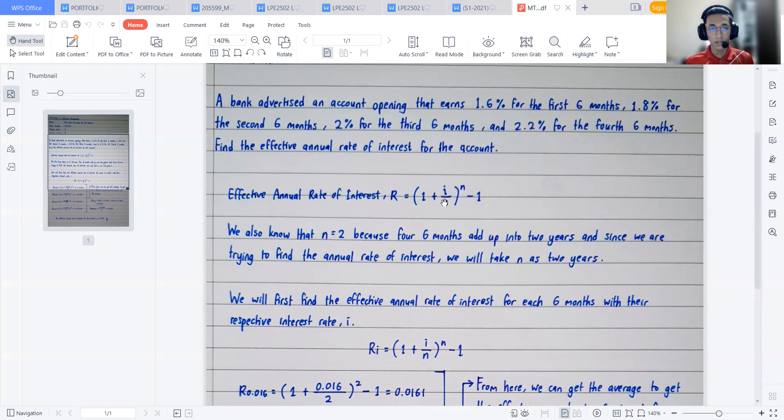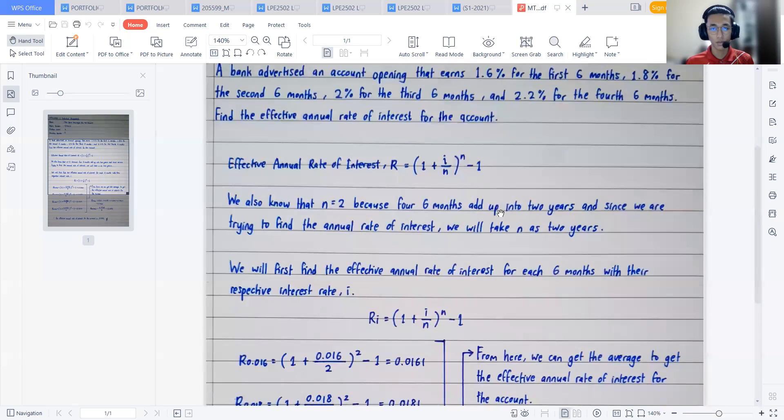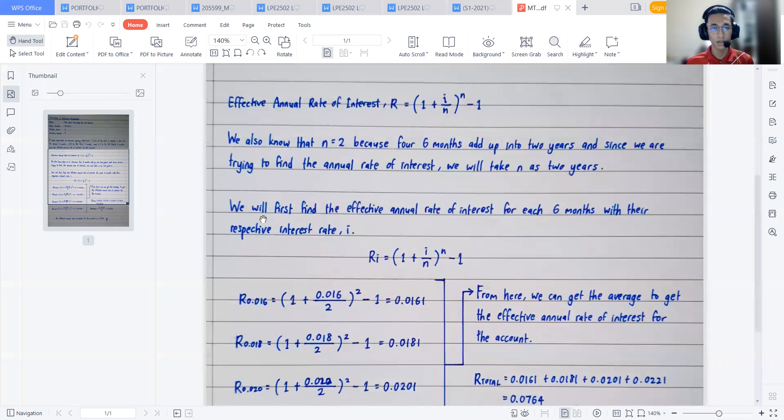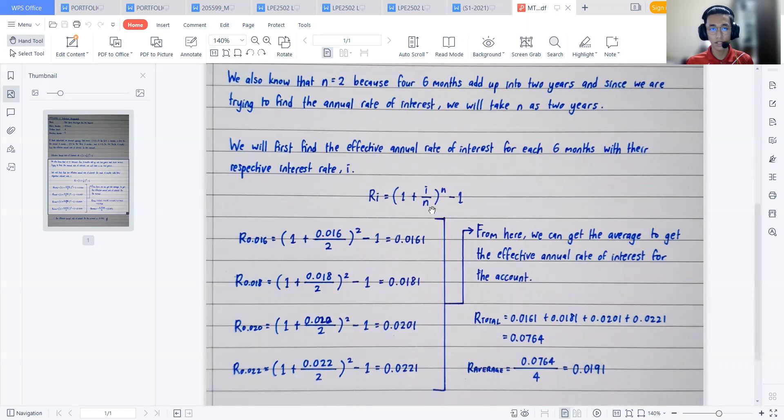And the i is also given in the question. It is very straightforward: we have 1.6%, 1.8%, 2%, and 2.2%. So we already have all of the information that we needed in order to solve this equation. Now we will first find the effective annual rate of interest for each of the six months with their respective interest rate i.